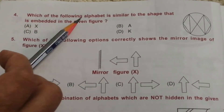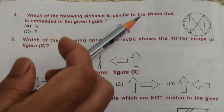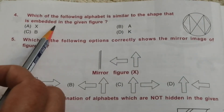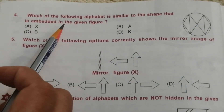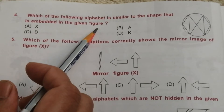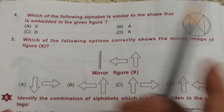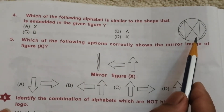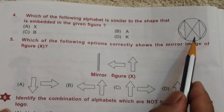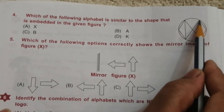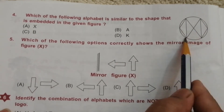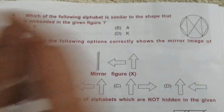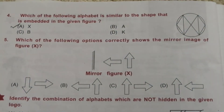Problem 4: which of the following alphabets is similar to the shape that is embedded in the given figure? If we check the figure, we can clearly see the alphabet X. Yes, X is the answer.